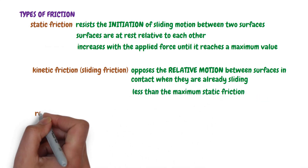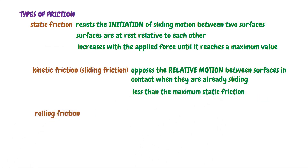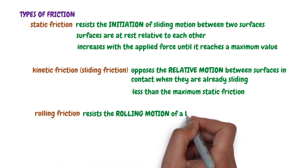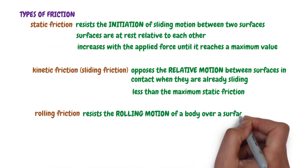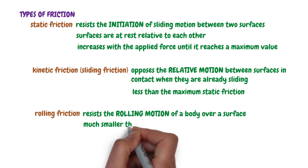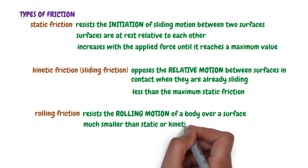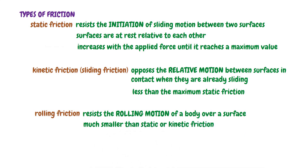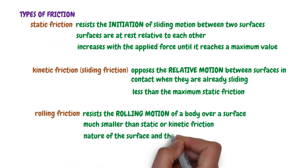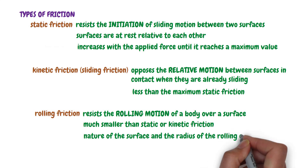The third type is rolling friction. Rolling friction is the force that resists the rolling motion of a body over a surface. It is usually much smaller than static or kinetic friction, and it depends on factors like the nature of the surface and the radius of the rolling object.